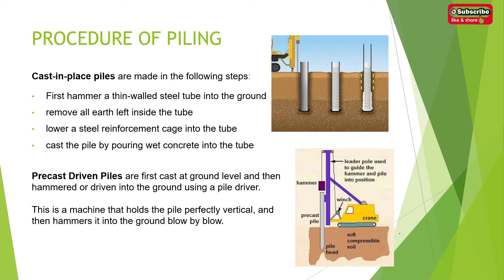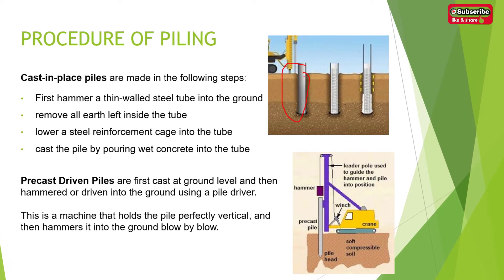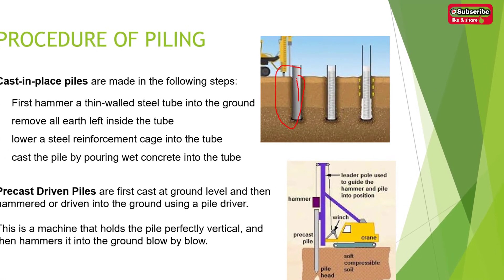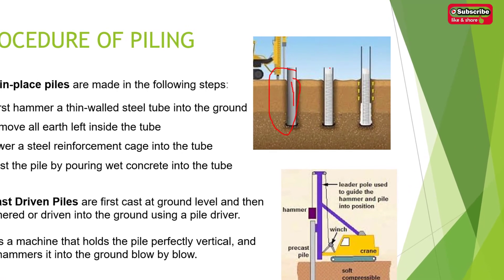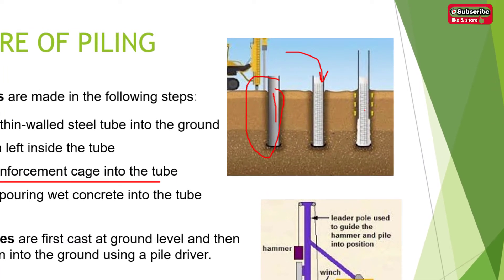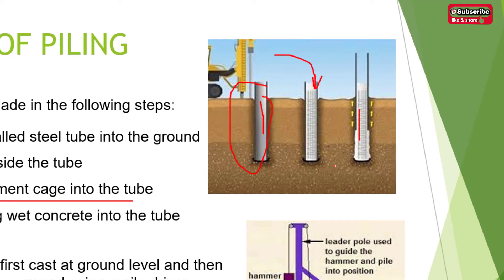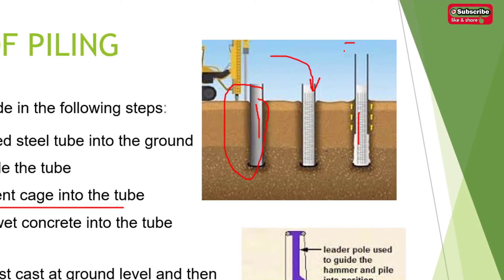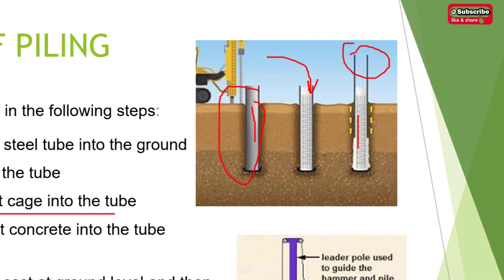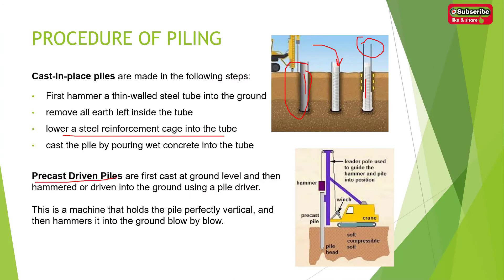Next, the procedure of piling. For cast-in-place piles, first we hammer a thin-walled steel tube into the ground, then remove all earth material from the tube, lower a steel reinforcement cage into the tube, and cast the pile by pouring wet concrete into the tube. After curing, the steel tube is removed and can be reused for the next piling.